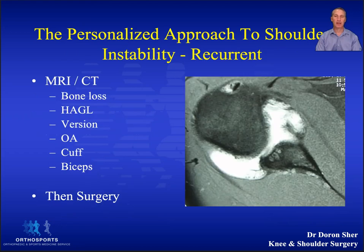It is important to have a full workup of the patient with recurrent instability to see which operation will be best. You particularly need to know about bone loss and HAGL lesions, and this is where the MRI arthrogram is so important, because you can miss a HAGL lesion without it.